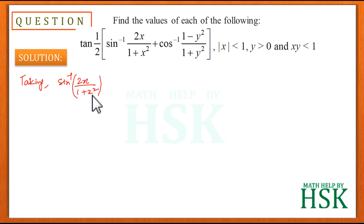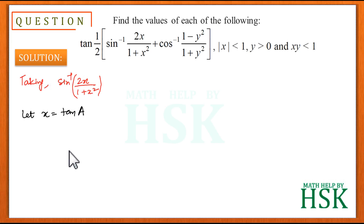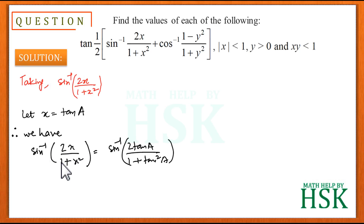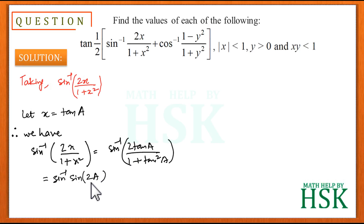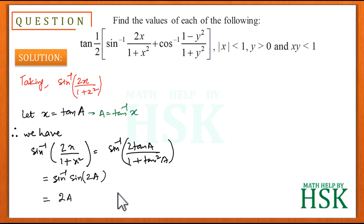Taking sin⁻¹(2x/(1+x²)) first. If we place x = tan(a), then sin⁻¹(2x/(1+x²)) = sin⁻¹(2tan(a)/(1+tan²(a))). We know this equals sin⁻¹(sin(2a)) = 2a. Since x = tan(a), we have a = tan⁻¹(x), so this expression simplifies to 2tan⁻¹(x).